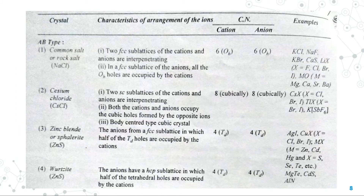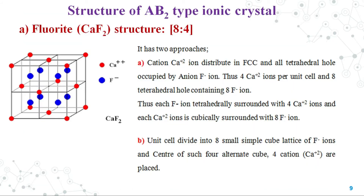This part is a table to summarize the first four types of AB type crystal lattices with their characteristics, the coordination numbers of cation and anion, and all other details. Now let us see the AB2 type of ionic crystals.